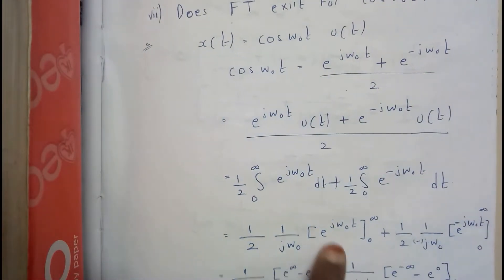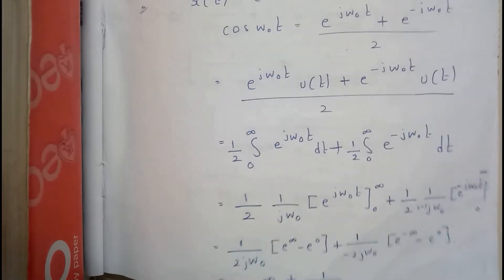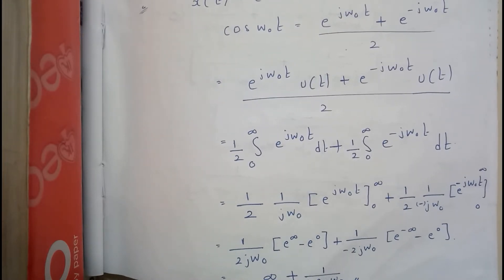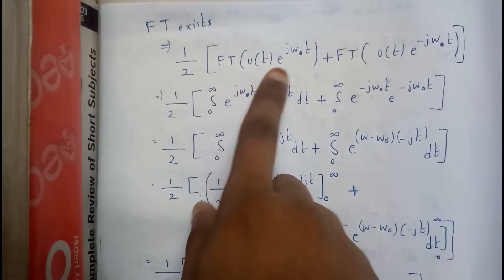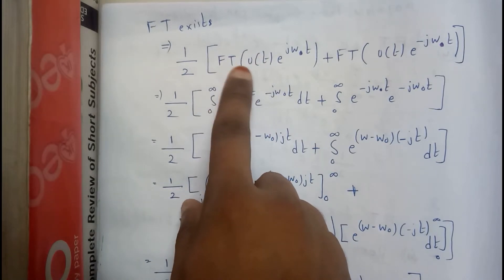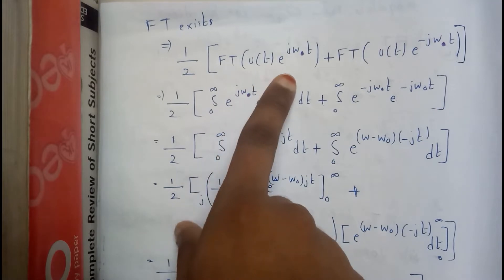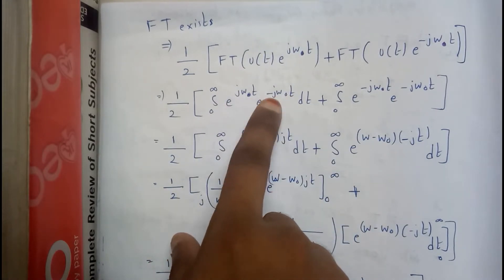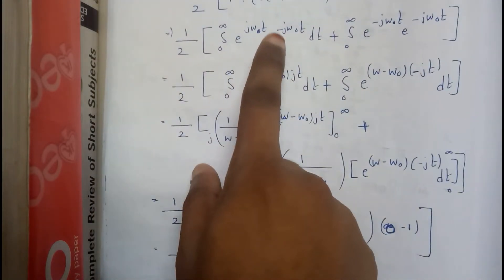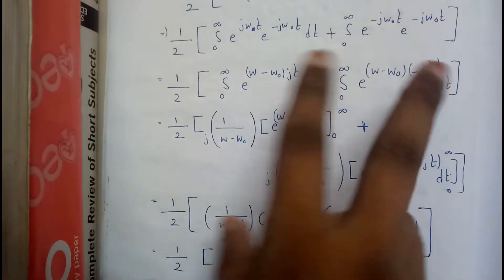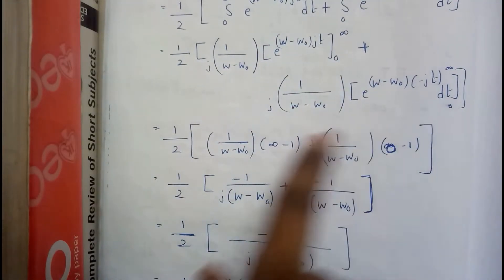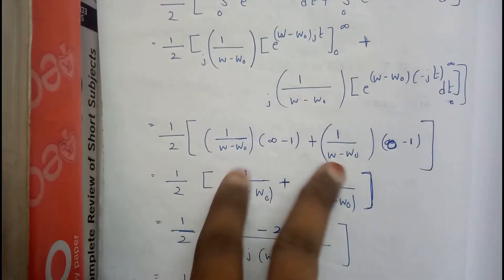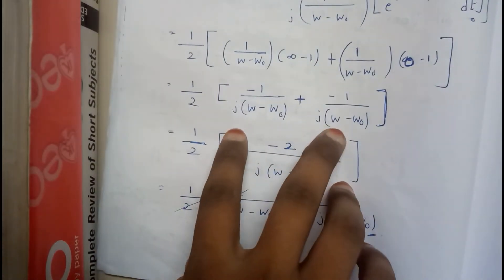Initially we are checking whether the Fourier transform exists or not. After solving, we got infinity plus something, so we proceed. Applying the main formula — it is almost similar to previous formulas. For u(t) · e^(jω₀t), taking the common terms j and t outside, we perform the integration and obtain two equations. Applying limits from 0 to infinity in both cases, we are left with two terms.